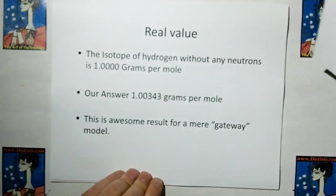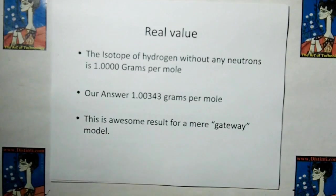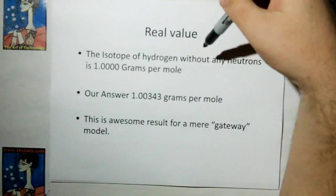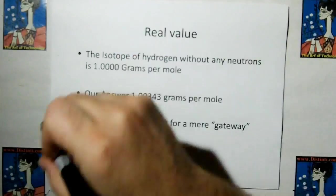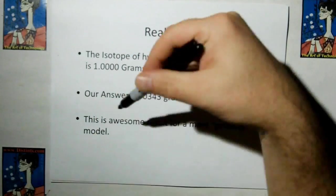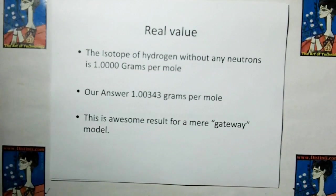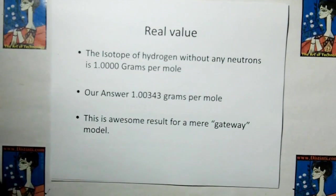But scientists like to put this into grams per mole. And so we multiply it by 1000, and this is the number we end up with for our hypothetical model, 1.003436 grams per mole. So let's compare that. We have to compare it to what is the mole of the isotope of hydrogen that has no neutrons. The isotope of hydrogen that does not have a neutron is 1 gram per mole. And our answer was 1.00343. This is awesome for a mere gateway model. Absolutely awesome.